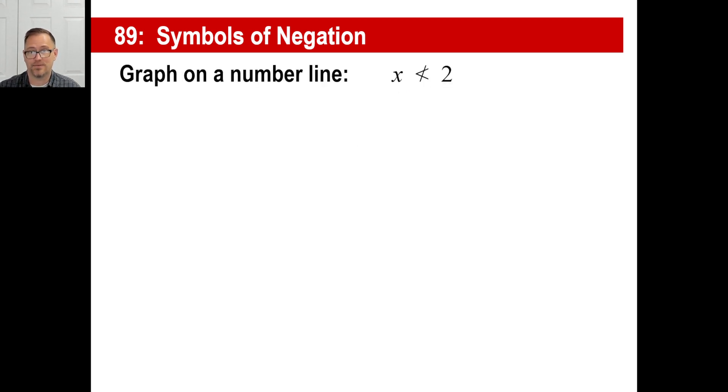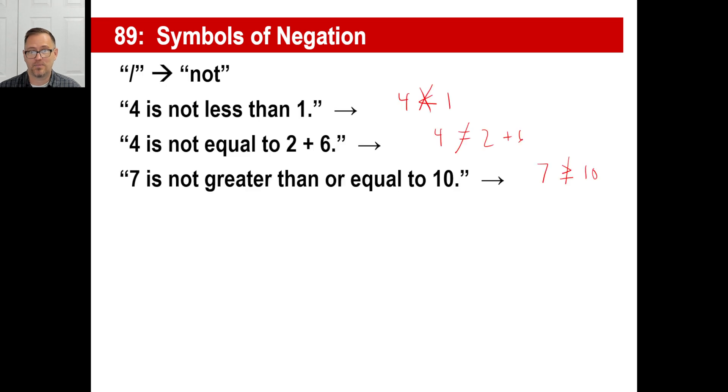Now, if you've knocked out two possibilities, there's only one possibility left, right? So in other words, how are we going to write this? Four is not less than one. If it's not less than one, what are the two other possibilities? It's greater than one, right? We'll talk more about it a little bit later. But if four is not equal to two plus six, the only possibility is it could be greater than or less than. Seven is not greater than or equal to ten. Well, if it's not greater than or equal to, we've just knocked out two of the three possibilities. So it's going to have to be the third possibility, right? Seven is less than ten.